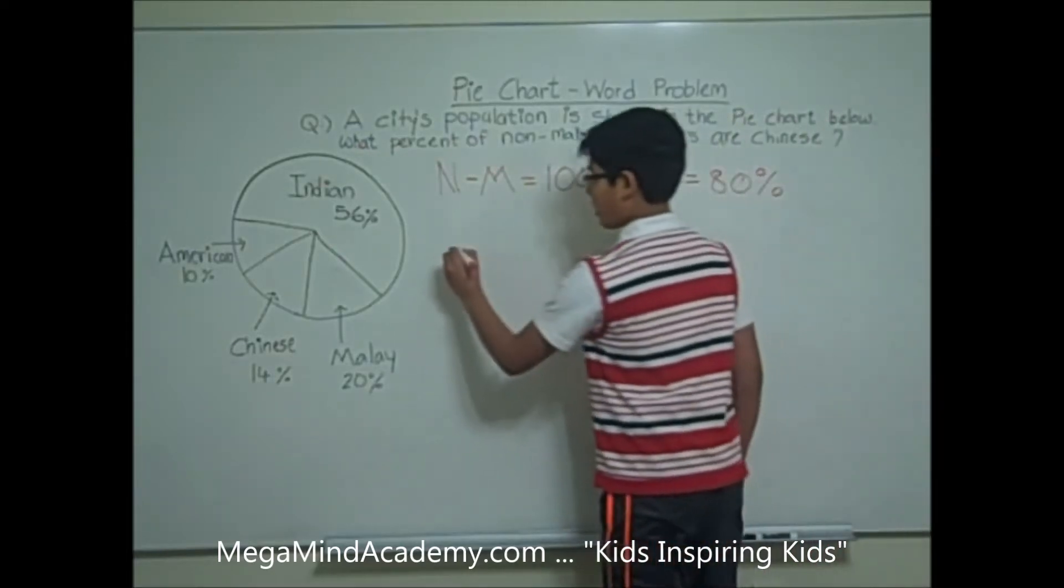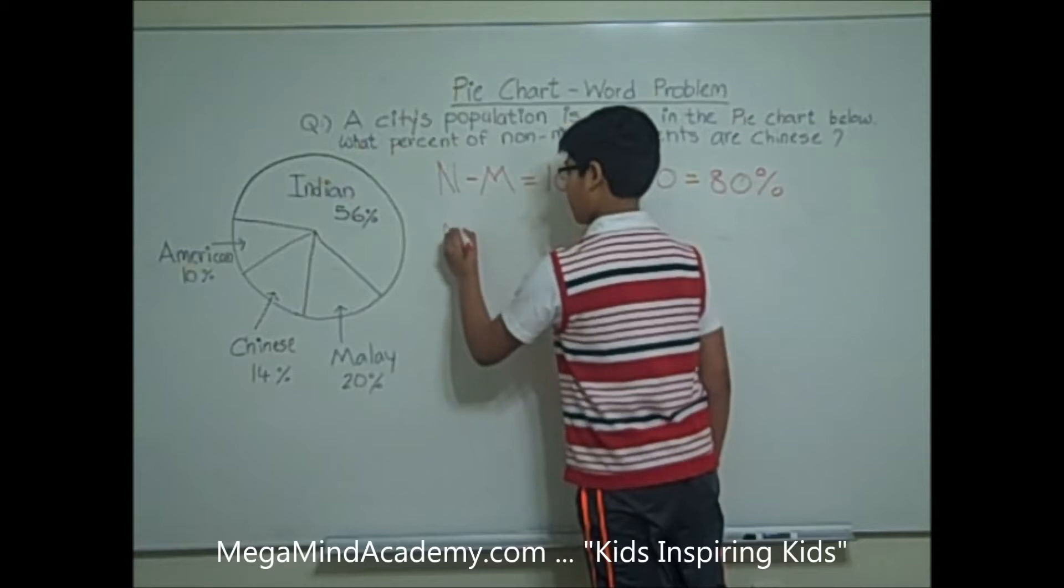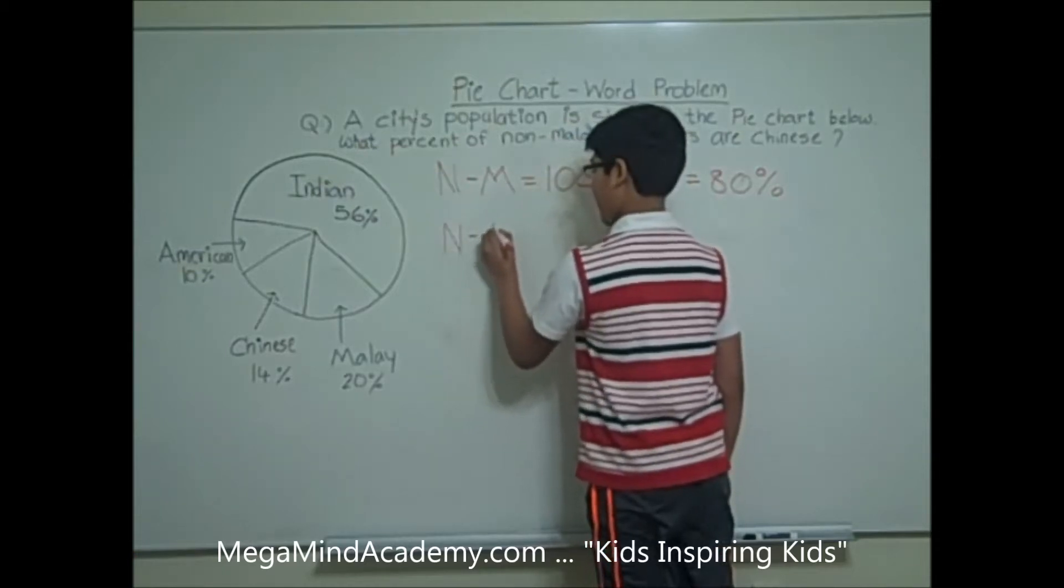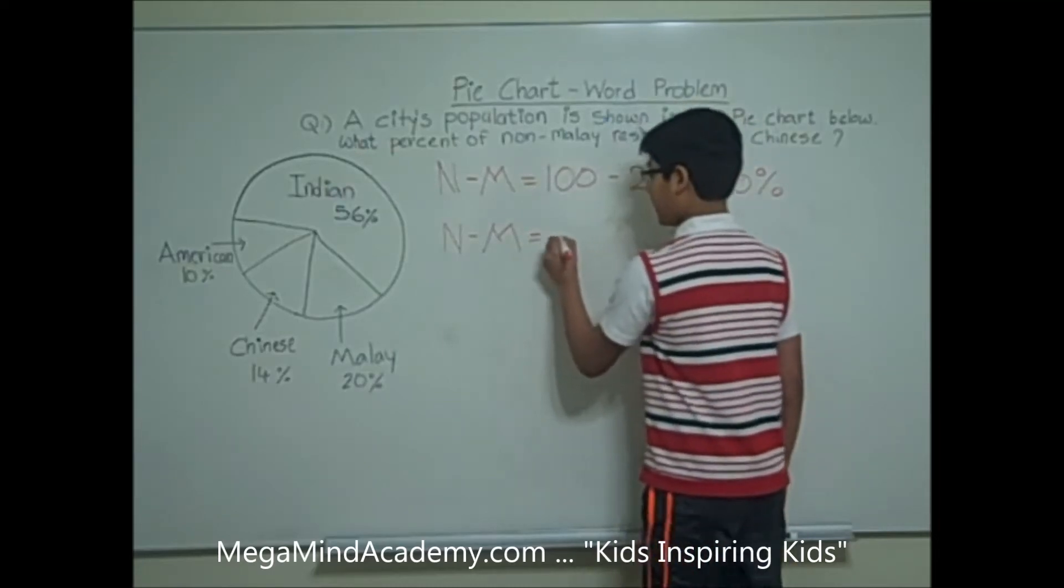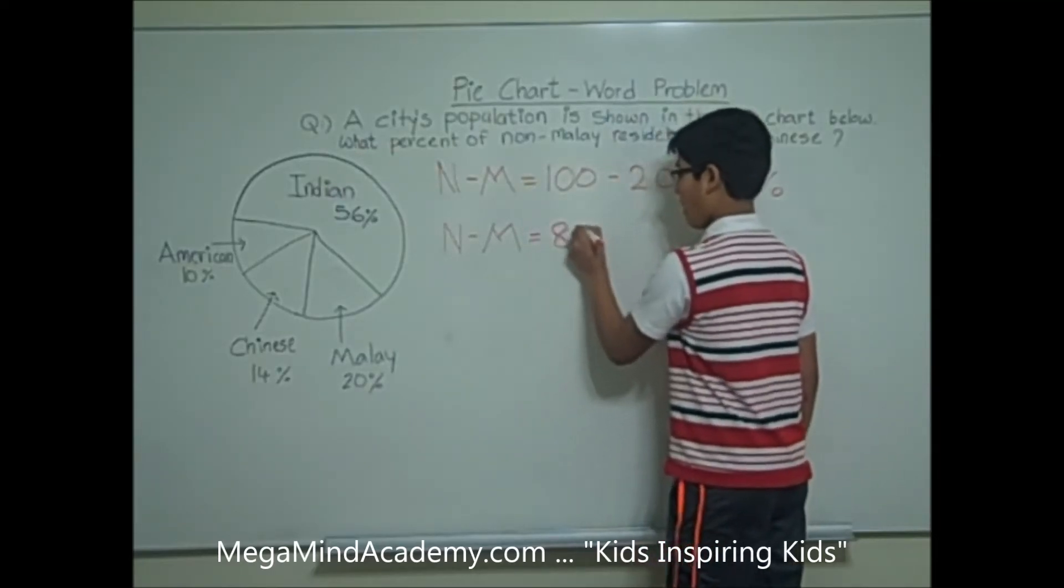So, the non-Malay residents, NM (N for non and M for Malay), is equal to 80%.